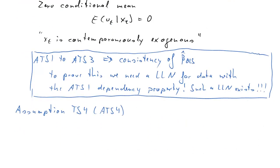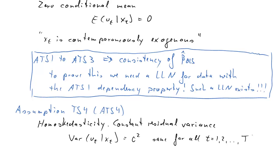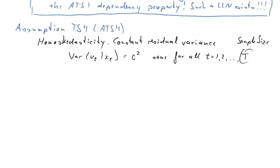Next assumption, time series assumption 4. This assumption is again very similar to the one we had in the Gauss-Markov assumptions. It's a homoscedasticity assumption. So we assume that the residual variance is constant, or formally expressed, it's that the variance of UT conditional on XT is equal to sigma squared. And that's the same for all time periods from 1 to capital T, where capital T is what we label the sample size for time series data. Not N, but capital T, but it has the same meaning.